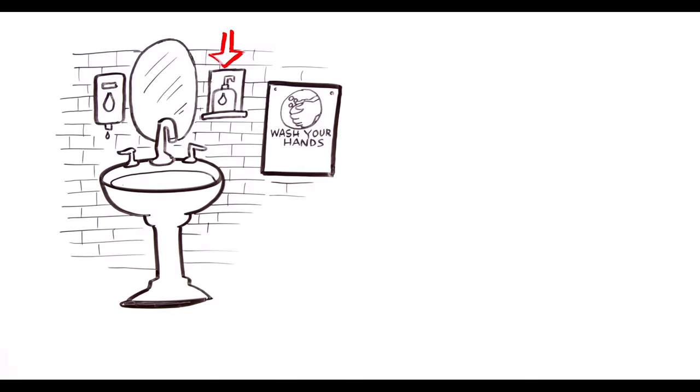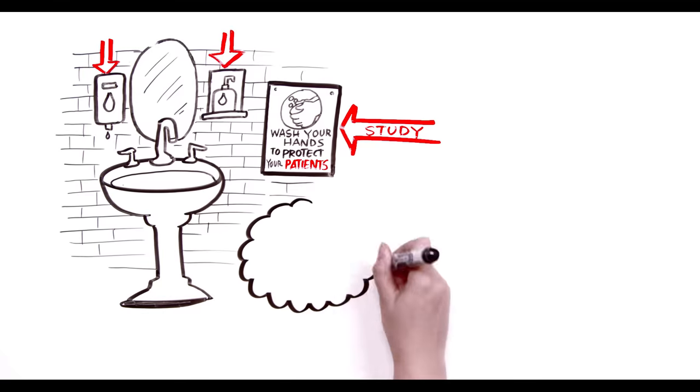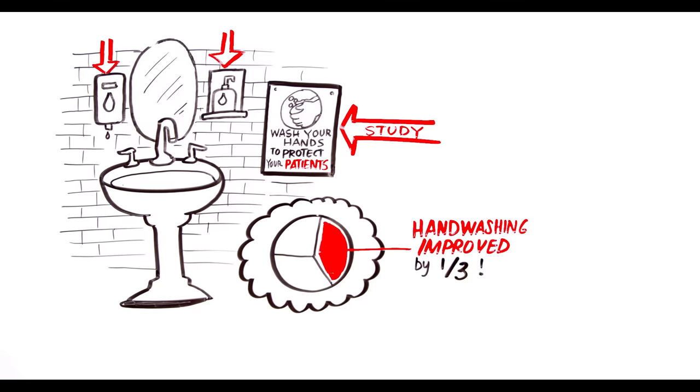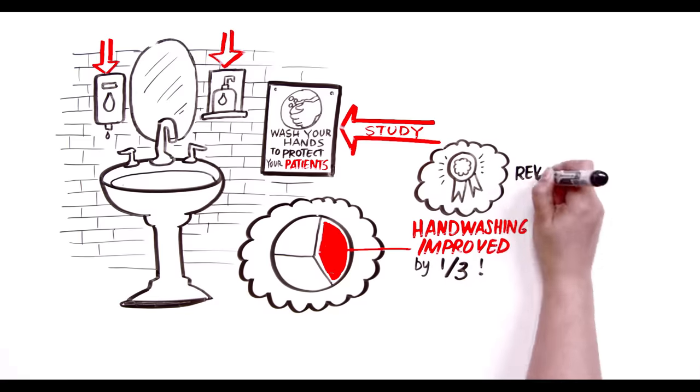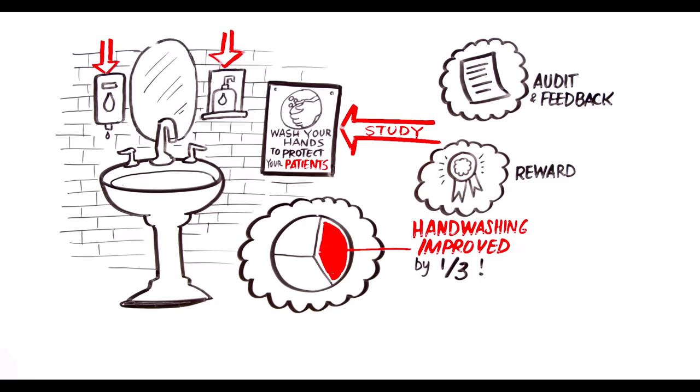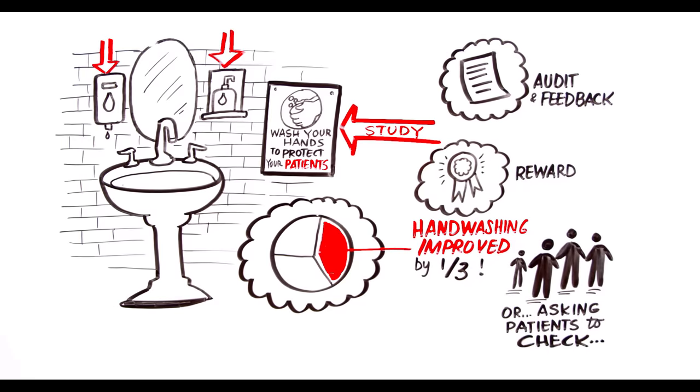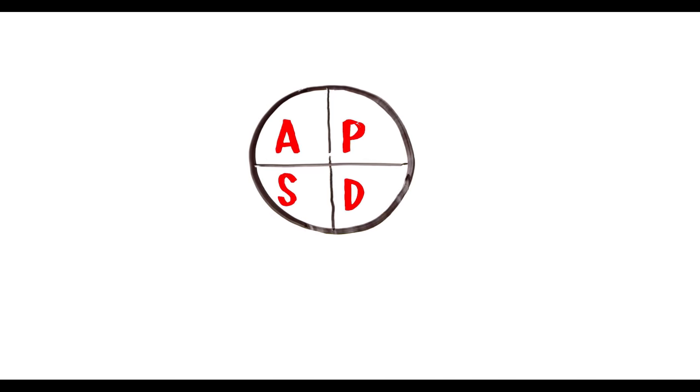Maybe it's new soap dispensers or little bottles of gel. Maybe you read about the study that changed the signage from 'wash your hands to protect yourself' to 'wash your hands to protect your patients,' which resulted in a third improvement over a two-week period. Maybe it's reward or audit and feedback or asking patients to check. Just pick one and get started. Then you test other changes and the PDSAs just keep rolling.